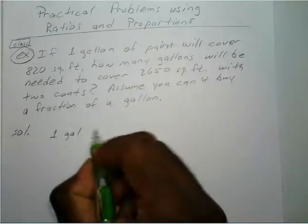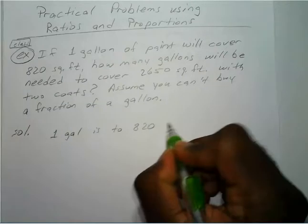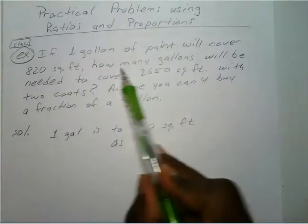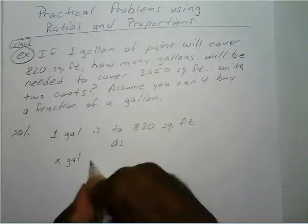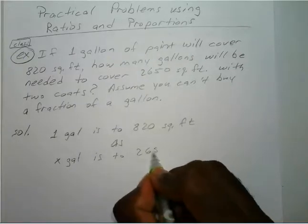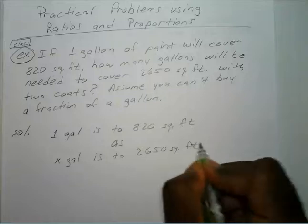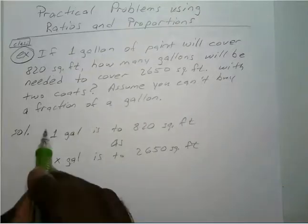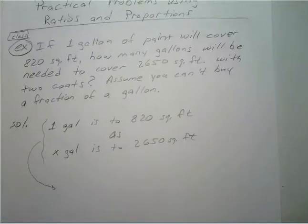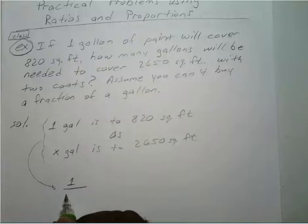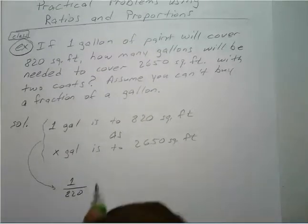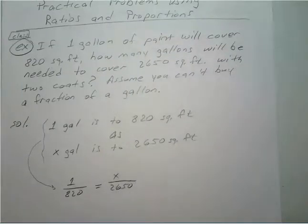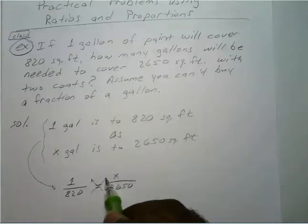So one gallon is to 820 square feet as we don't know how many gallons — we'll say X number of gallons — is to 2,650 square feet. Now we just have to set this up as a proportion: one gallon is to 820 square feet as X number of gallons is to 2,650 square feet. Now we cross multiply.